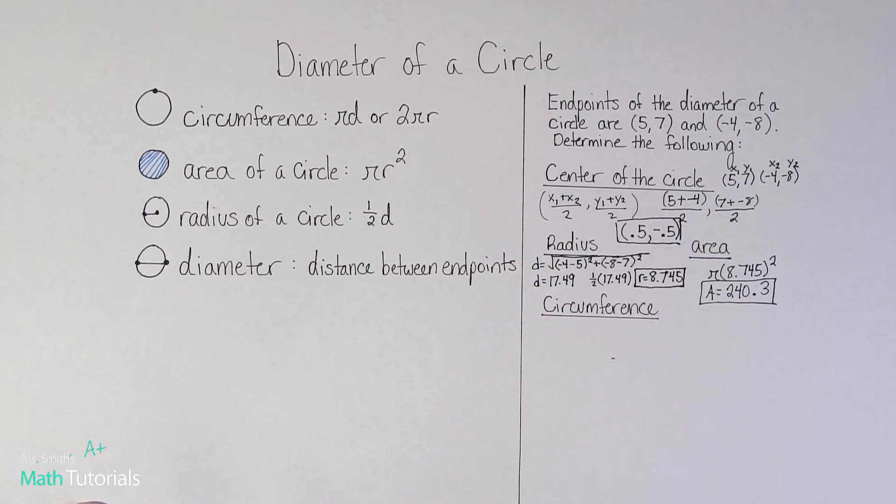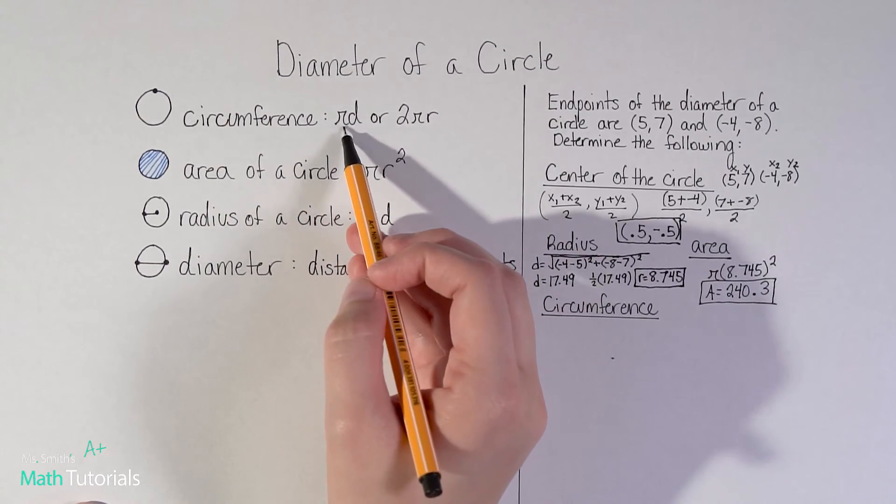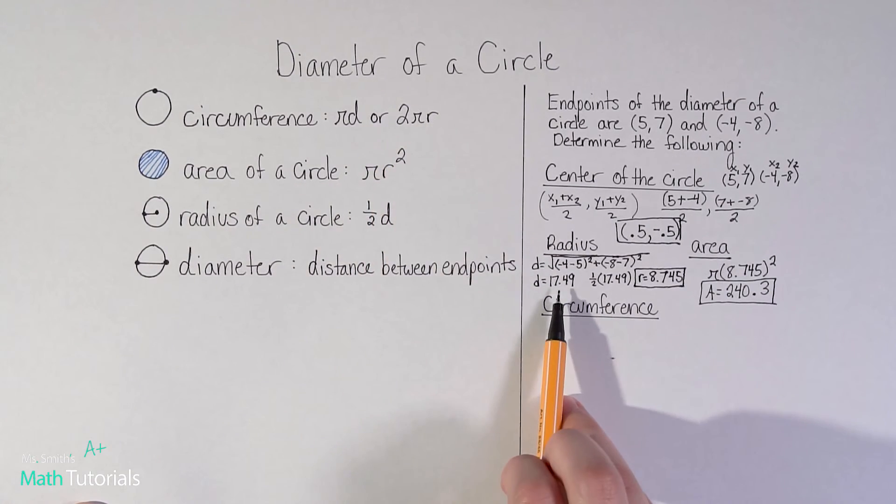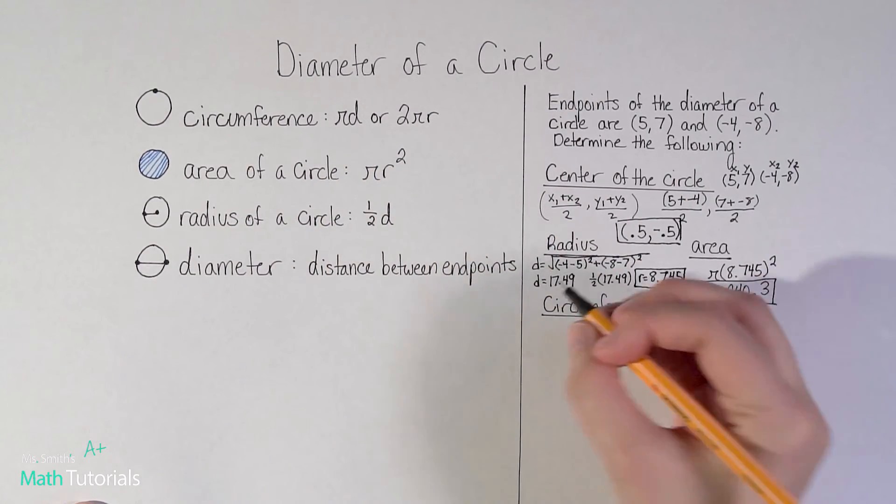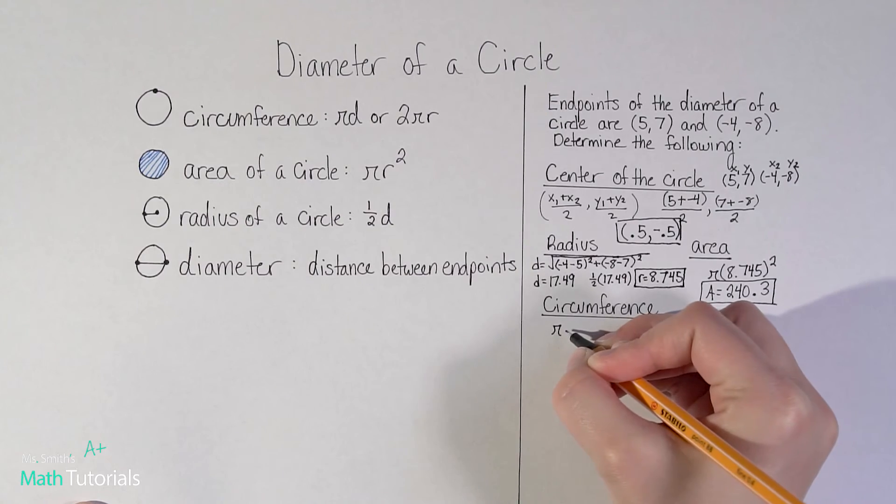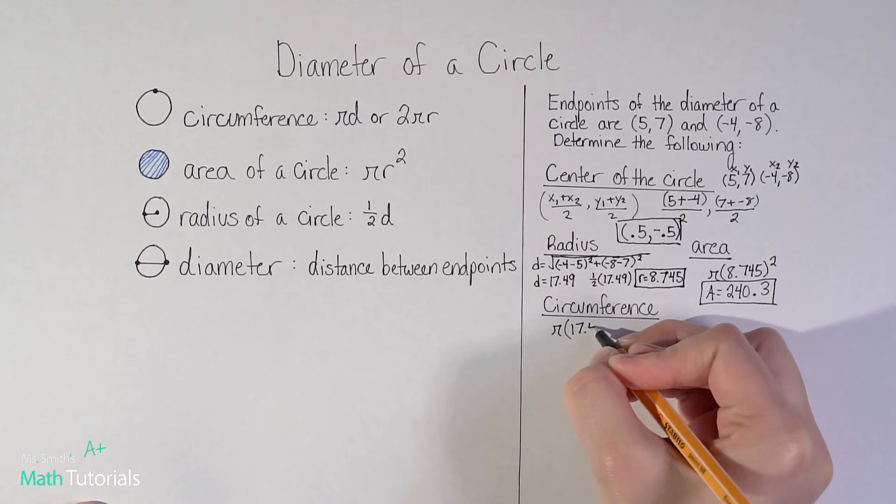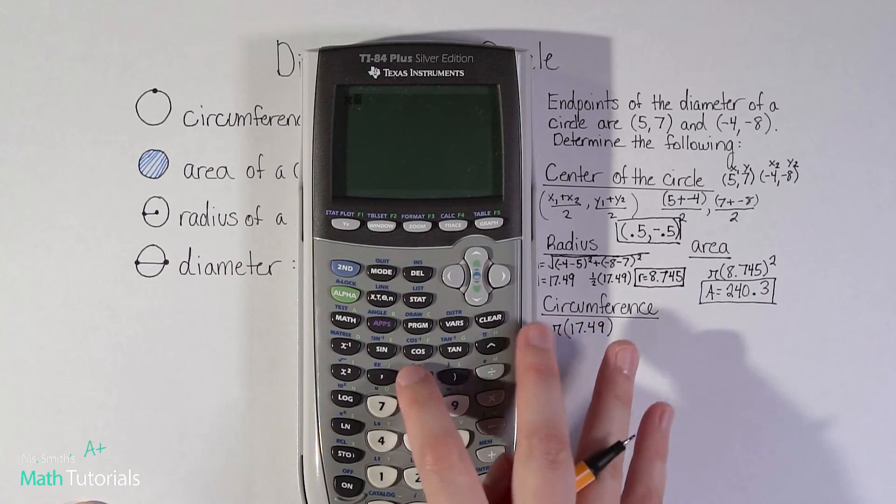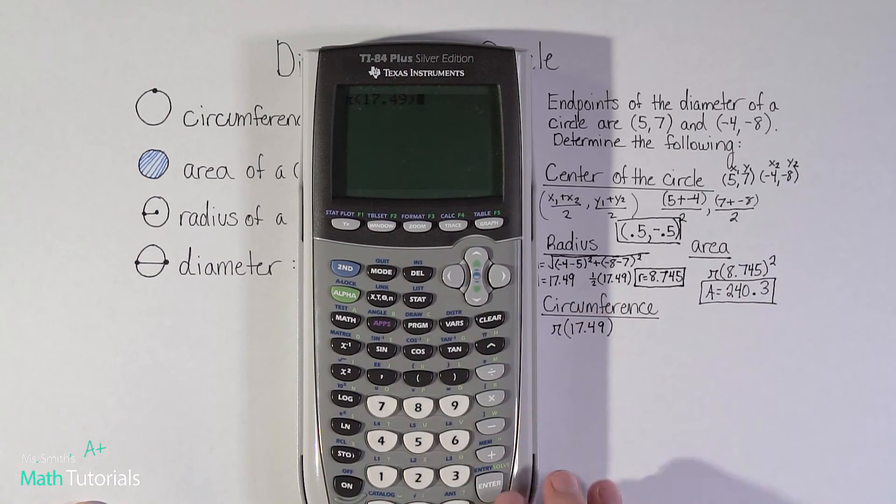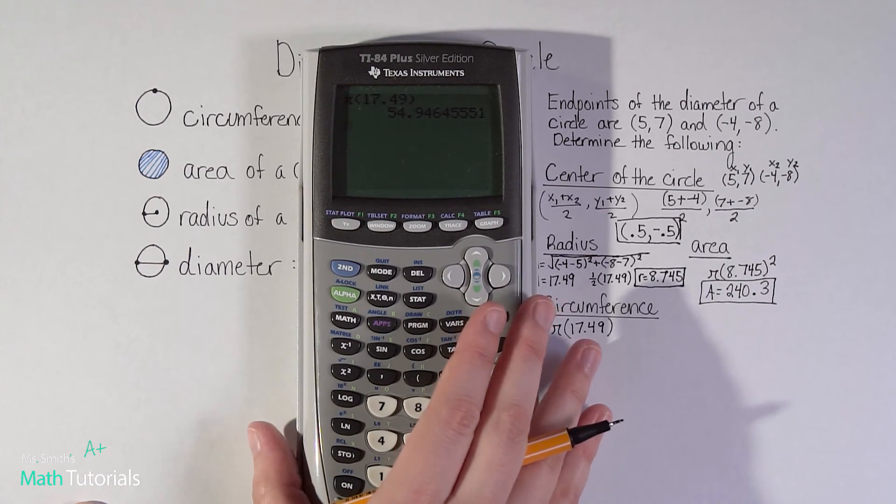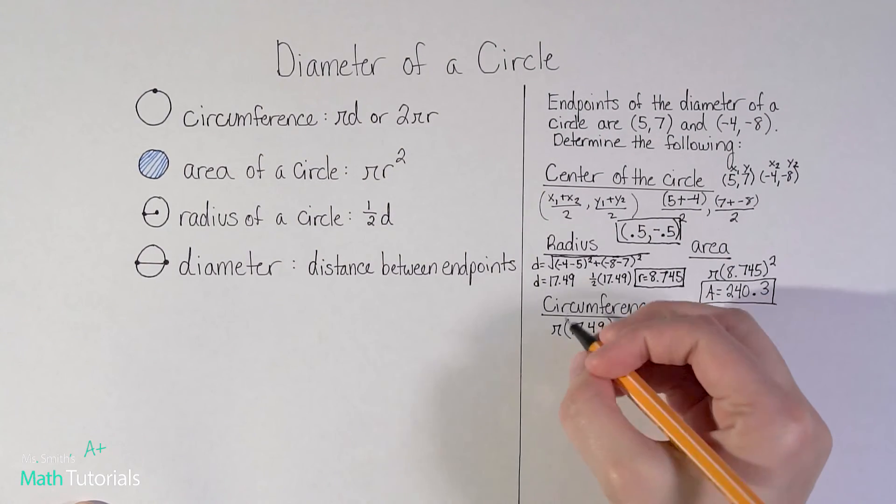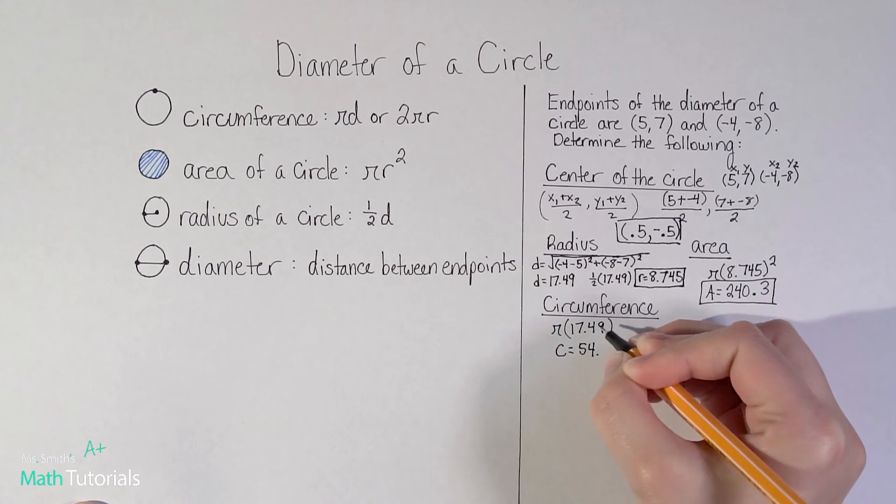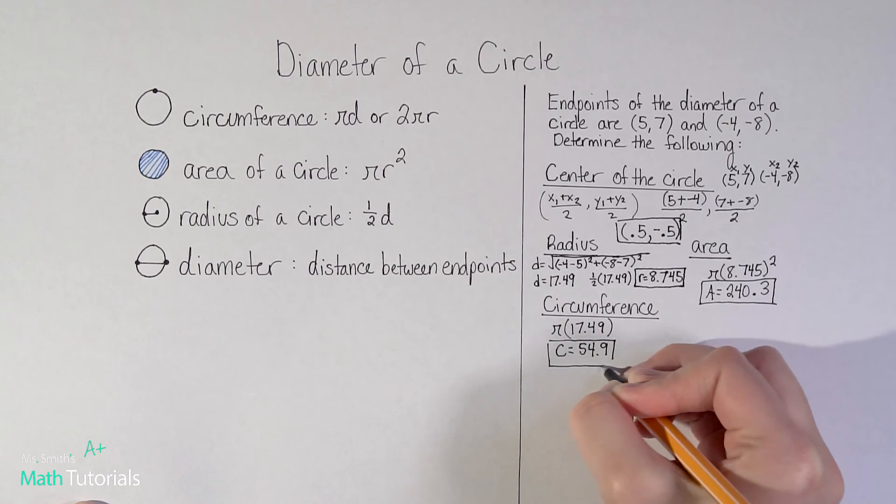Lastly, let's find the circumference. So circumference was either pi times the diameter or 2 times pi times the radius. Well, since I already know the diameter, I'm going to go with the shorter one. So I know that the circumference will be pi times the diameter, 17.49. I just think that one's a little shorter than the other one. So I'm going to type that into the calculator, pi times 17.49. So there it is. I'm going to round that to the nearest tenth. So the circumference is 54.9.